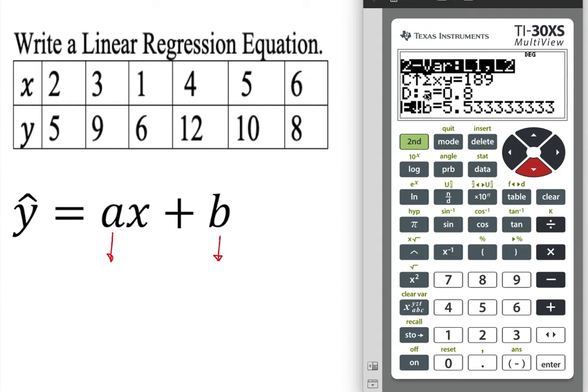We already have a is the slope, so I'm going to put down here a. So in this case, a is going to be approximately 0.80.